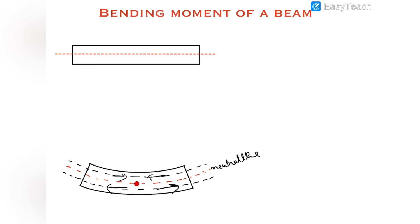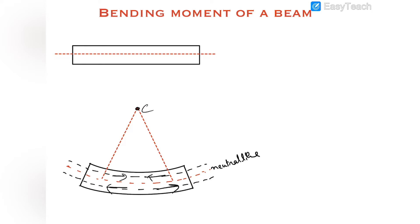The line above the neutral line is compressed — its length decreases — while the line below the neutral line expands and its length increases. The neutral line is defined as the line whose length remains constant for small bending. Let us suppose the radius of this neutral line is r.